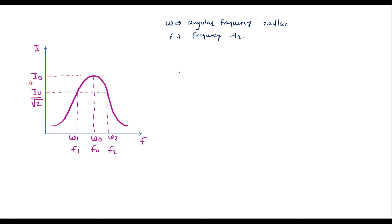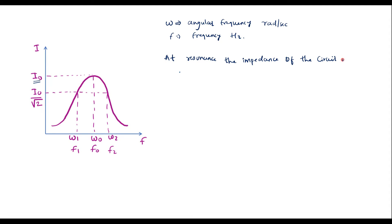At resonant frequency, maximum current flows into the circuit. Maximum current is represented as I0. At resonance, the impedance of the circuit is Z equal to R — that is, impedance equals resistance, Z = R.